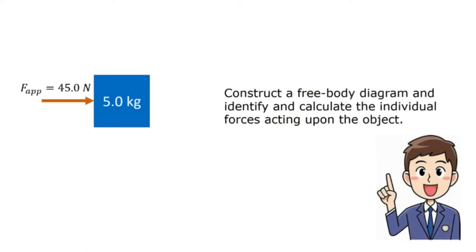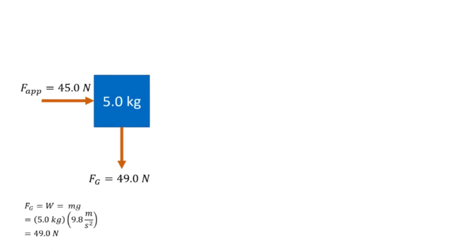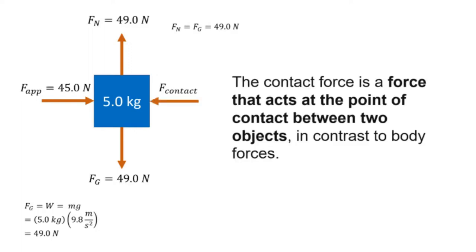We need to construct a free body diagram and identify and calculate the individual forces acting upon the object. Starting with the 5-kilogram box, we are given an applied force of 45 newtons and draw the diagram accordingly. For the force of gravity, we calculate it using w equals mass times gravity, giving us 49 newtons. For the normal force, we copy the magnitude of the gravity force since they are balanced. The contact force acts at the point of contact between two objects. To determine its direction, we look at the direction of the applied force and oppose it — since the applied force is directed to the right, the contact force exerted by the bigger box on the smaller box is directed leftward.